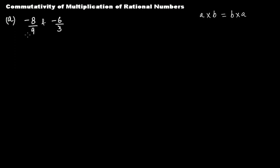So let's see. Here we have two rational numbers: -8/9 and -6/3. First we are going to multiply -8/9 multiplied by -6/3.